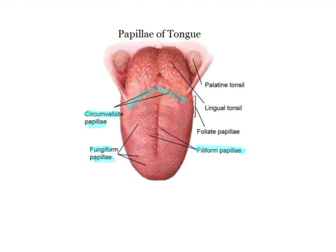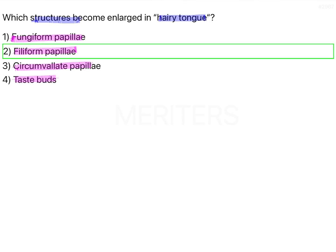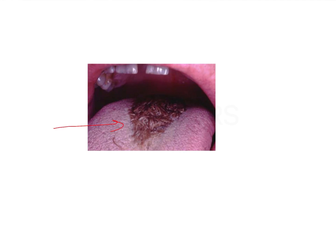Hairy tongue is a phenomenon that occurs because of enlargement or hypertrophy and defective desquamation of filiform papillae. There is increased hypertrophy of the filiform papillae on the dorsal surface of the tongue, because of lack of mechanical stimulation or debridement.